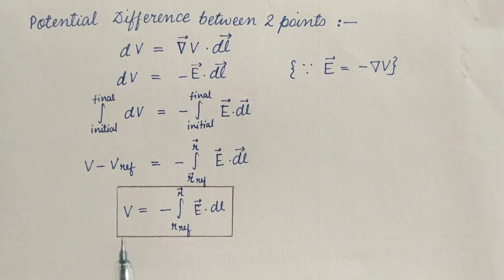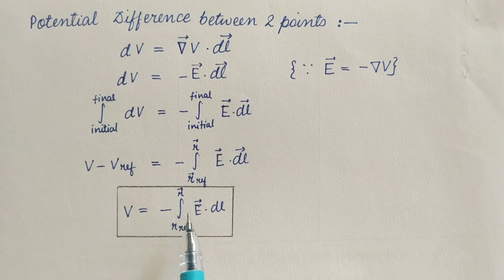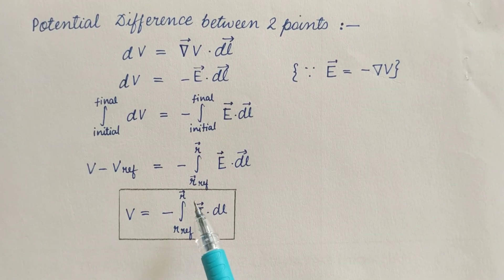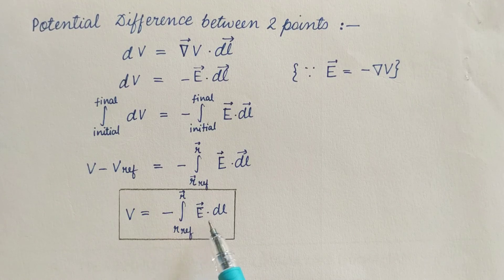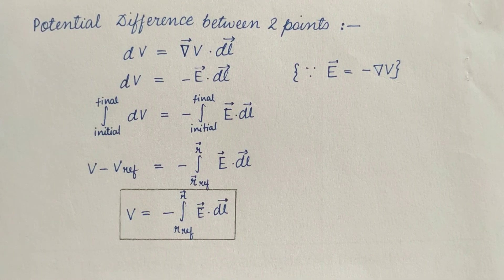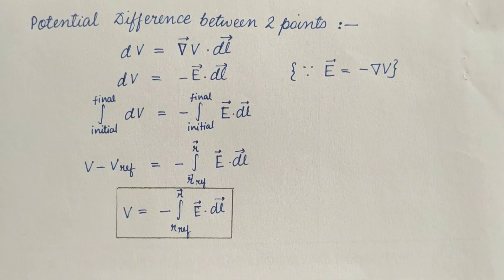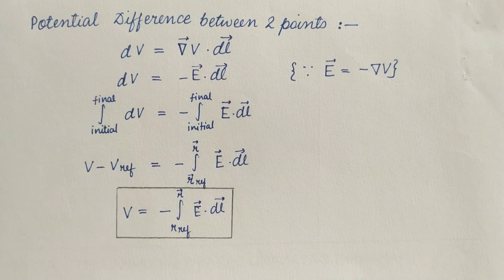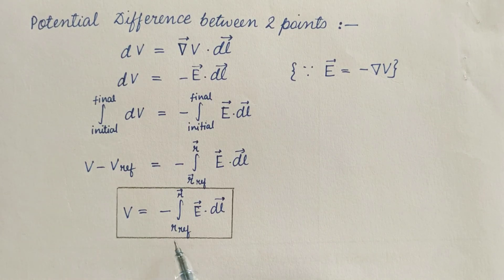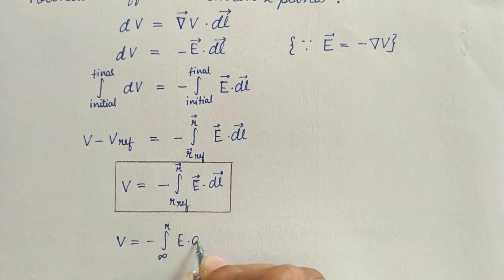At last we get V equals minus integration from R reference point to observation point R, E dot DL. The case where the reference point can be taken as infinite would be possible when electric field would vanish. At infinite distance electric field vanishes. So in that case it is convenient to take reference point as infinite. Then the equation will become this.